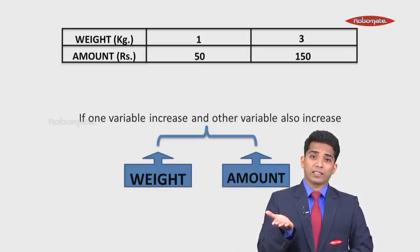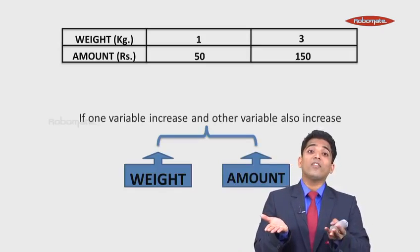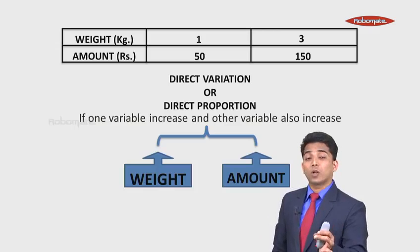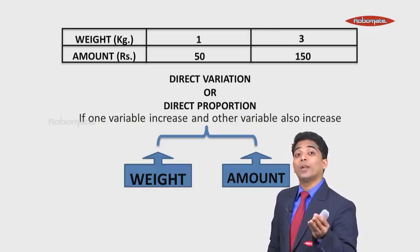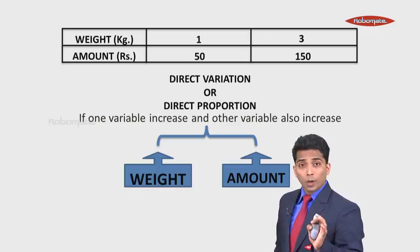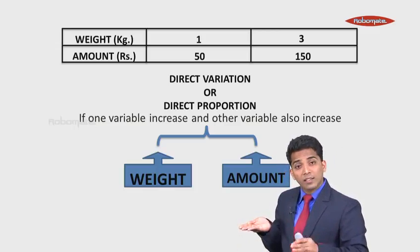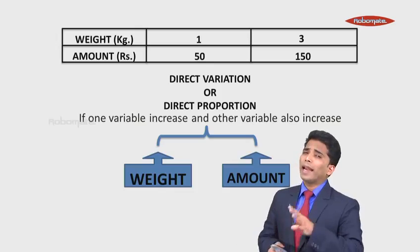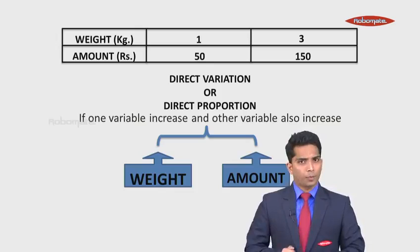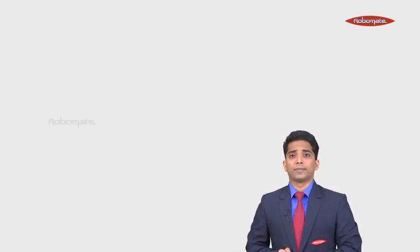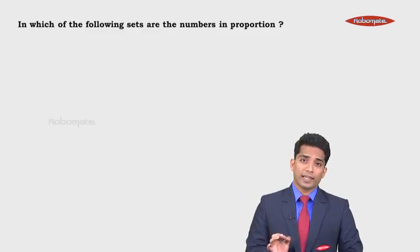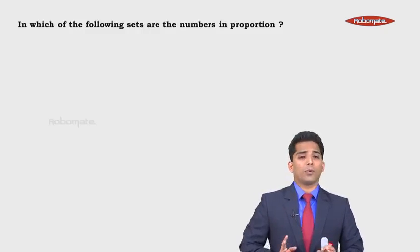When the weight is increasing the amount is also increasing. When one variable increases and the other also increases, we call it direct variation or direct proportion. When one quantity increases, the other also increases — it may be a situation of direct variation or direct proportion.